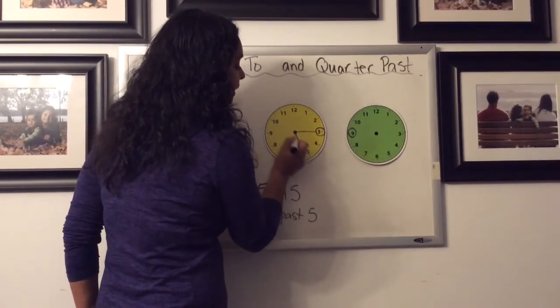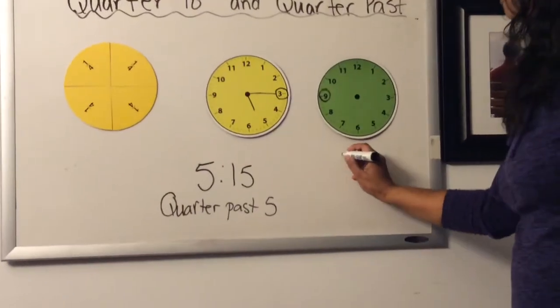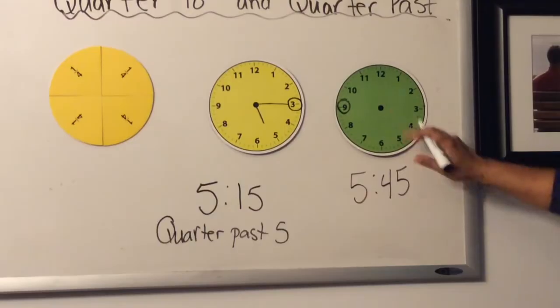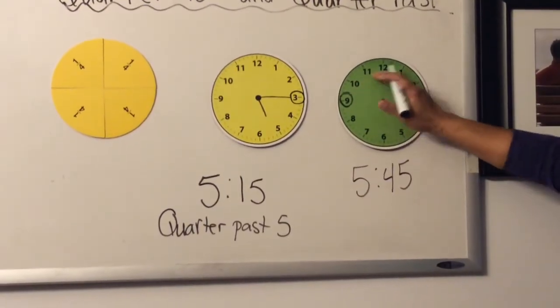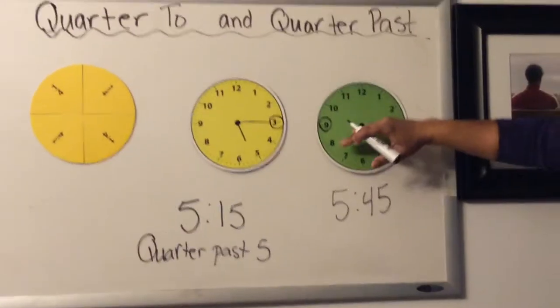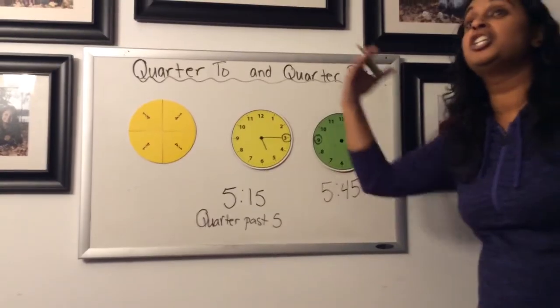Now if it was 5:45, that means that we're actually closer to the next hour. Anytime we're past the 30, we're actually closer to the next hour. So you want to look ahead to the next hour.